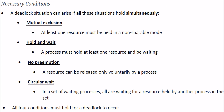There are certain necessary conditions for a deadlock. Deadlock is essentially related with resources. When we have one or multiple resources, a process may ask for a resource that is not available or is held by some other process. The system is at a standstill, waiting for someone to do something — like when you are in a meeting waiting for someone to break the ice. If all four necessary conditions occur simultaneously, then we say a deadlock has occurred.